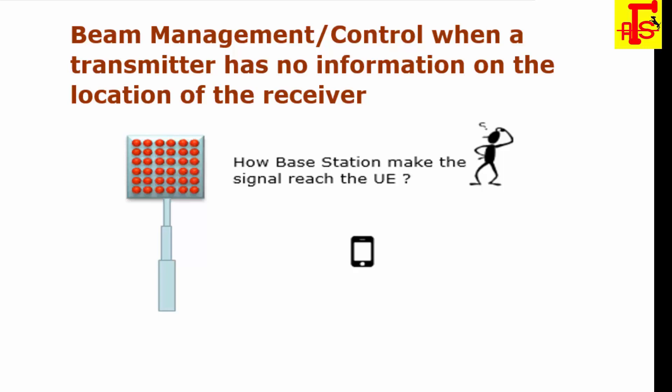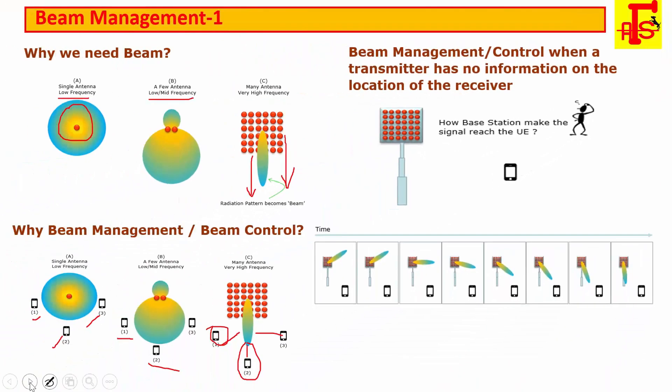Here is a serious problem with the base station sending signals as a beam: the signal beam can point to only a very narrow area and cannot cover a very wide area at the same time. The question is, how does the base station make contact with the UE if the transmitter has no information on the receiver's location?